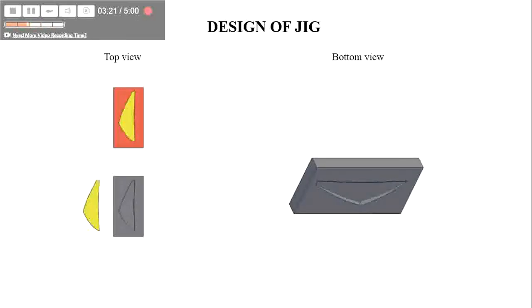This is the design of a jig. It is made from aluminum. Aluminum is a good conductor of heat, so heat is dissipated highly and freely.